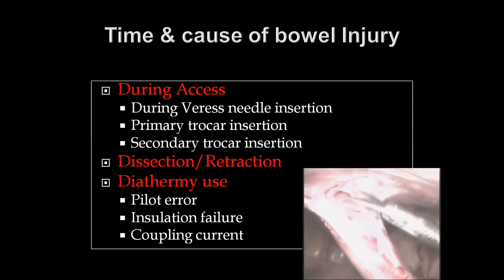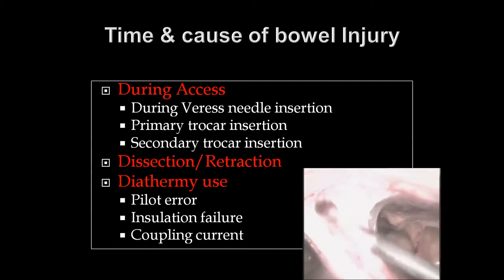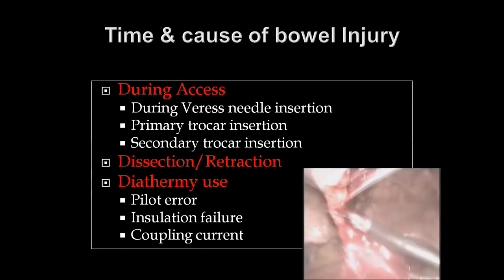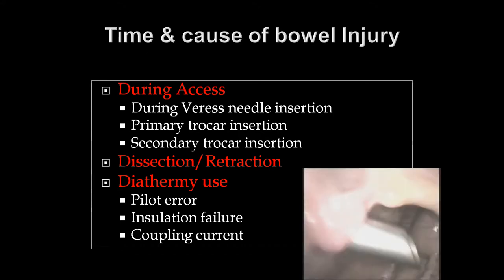The bowel can be injured during access — during Veress needle insertion or primary or secondary trocar insertion if not done carefully — or because of adhesiolysis, dissection, or traction if not properly performed. Injury may also occur due to diathermy use from pilot error, insulation failure, or current coupling, where current jumps from the active electrode through neighboring equipment and causes damage. Unlike other injuries, diathermy injuries are hard to recognize and can sometimes present late — after 3 to 4 days — with peritonism or peritonitis.